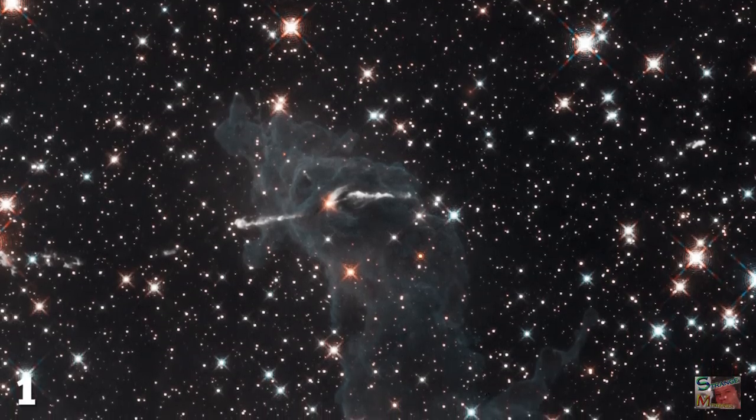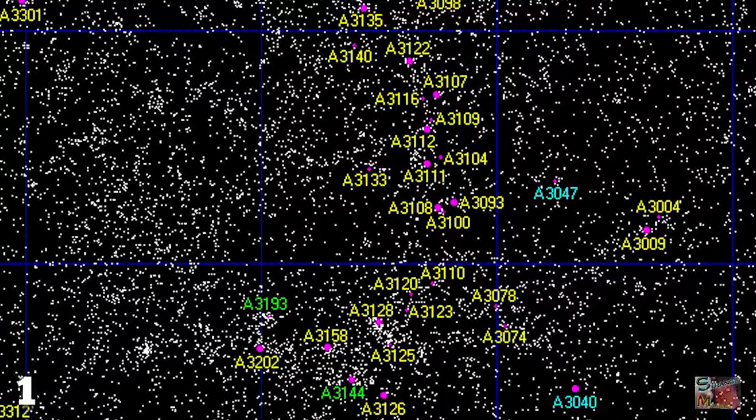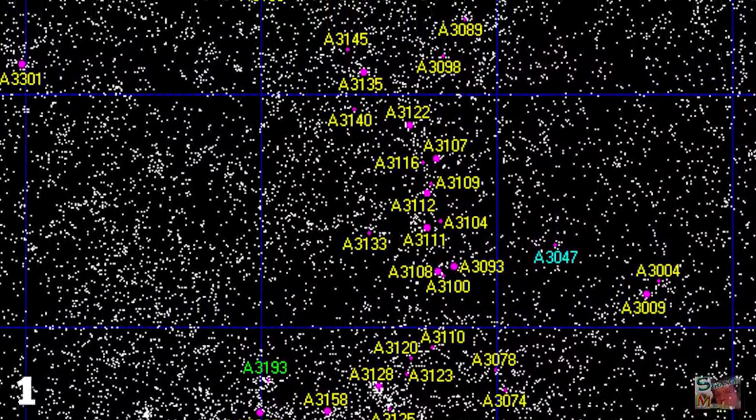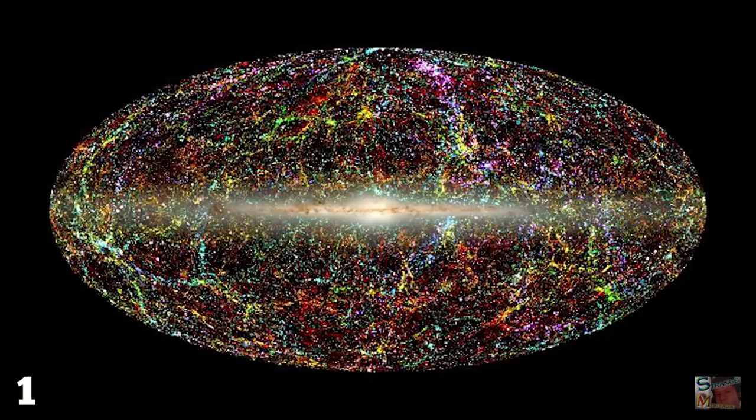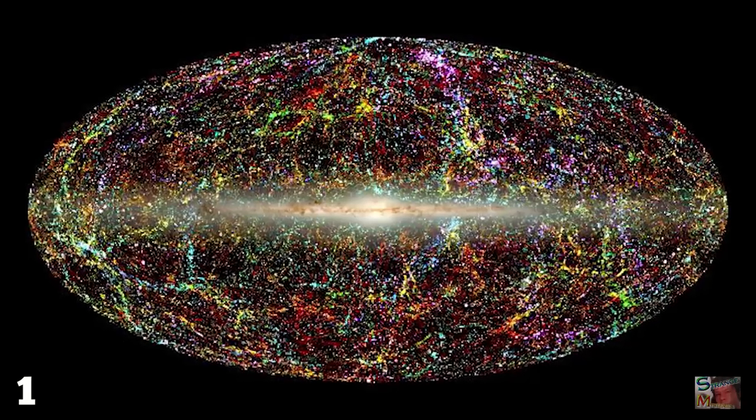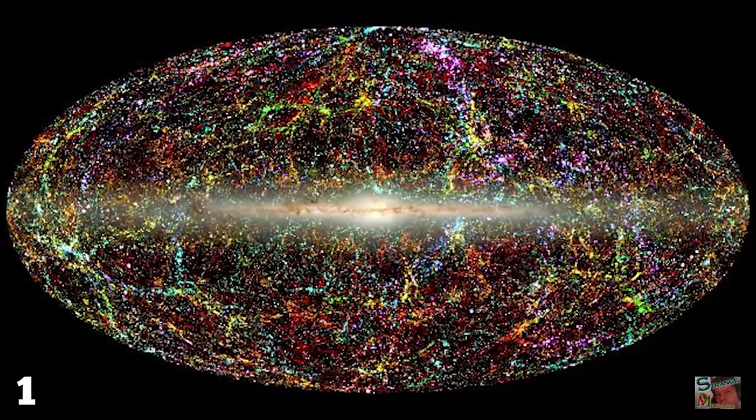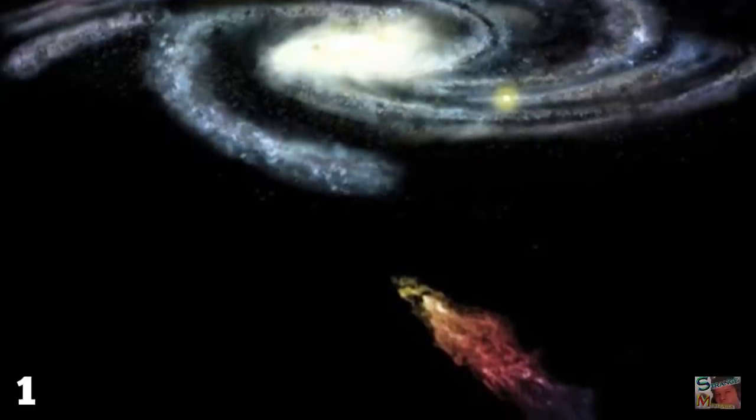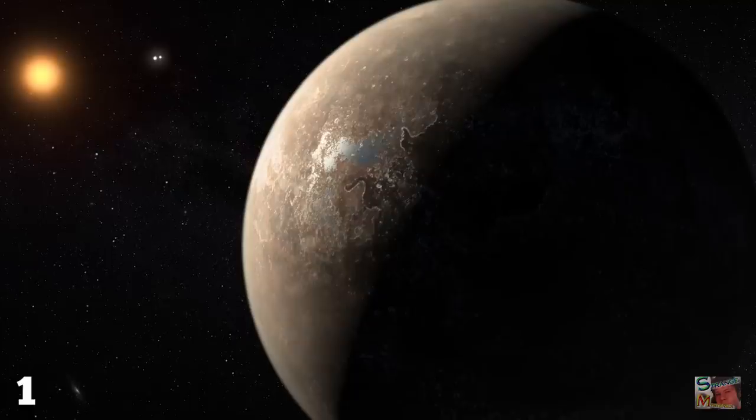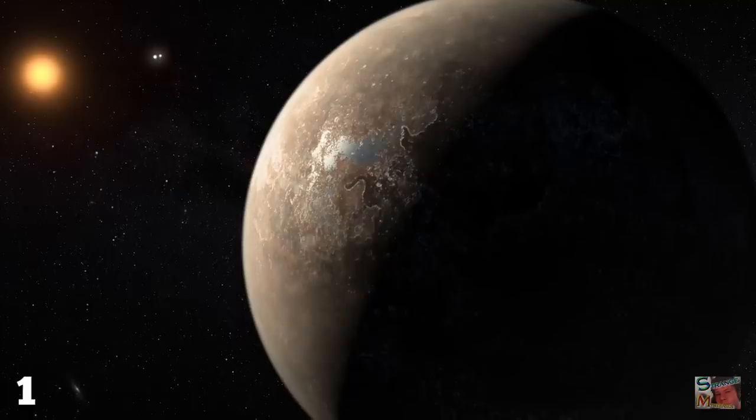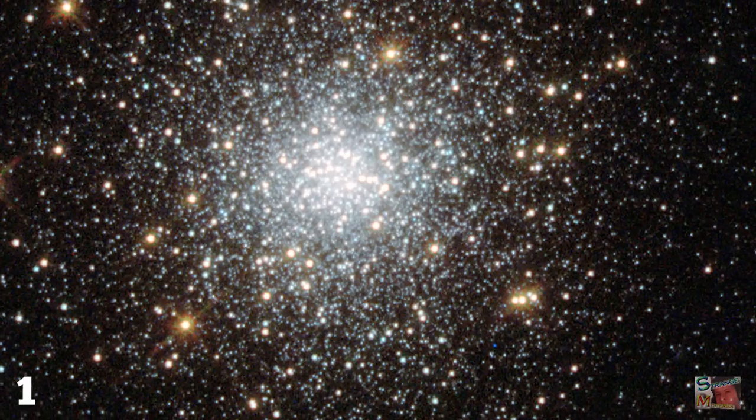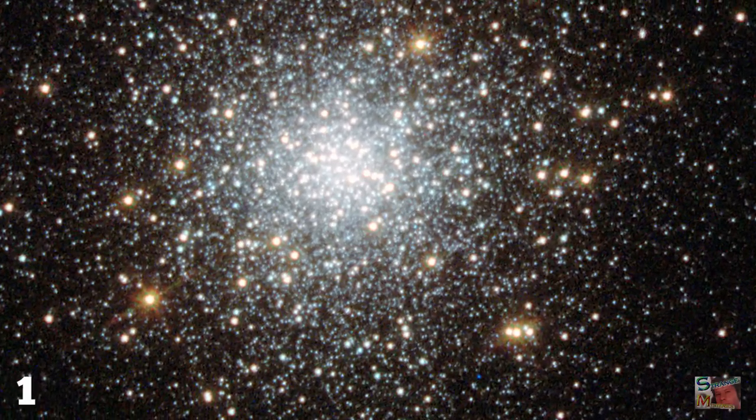So, there we have it. This region we call our observable universe is made up of 10 million superclusters and 2 trillion galaxies each, with around 100 billion stars of their very own. Out of all the stars and all the galaxies, 10 trillion are believed to be planetary systems, meaning that we are but one simple world in a cosmic backyard of stupendous proportions.